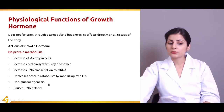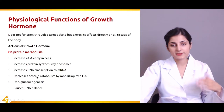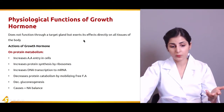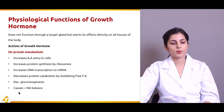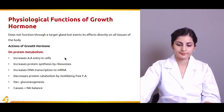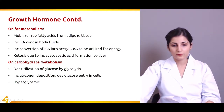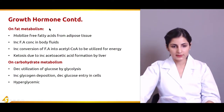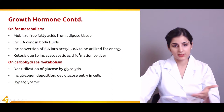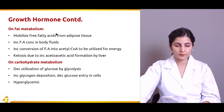Growth hormone decreases protein catabolism by mobilizing free fatty acids. It decreases gluconeogenesis — the production of glucose from substances other than glycogen. It causes a positive sodium balance. On fat metabolism, it mobilizes free fatty acids from adipose tissue, and the breakdown of adipose tissue results in free fatty acids in body fluids. These are then converted into acetyl-CoA to be utilized for energy, providing extra energy to the body.